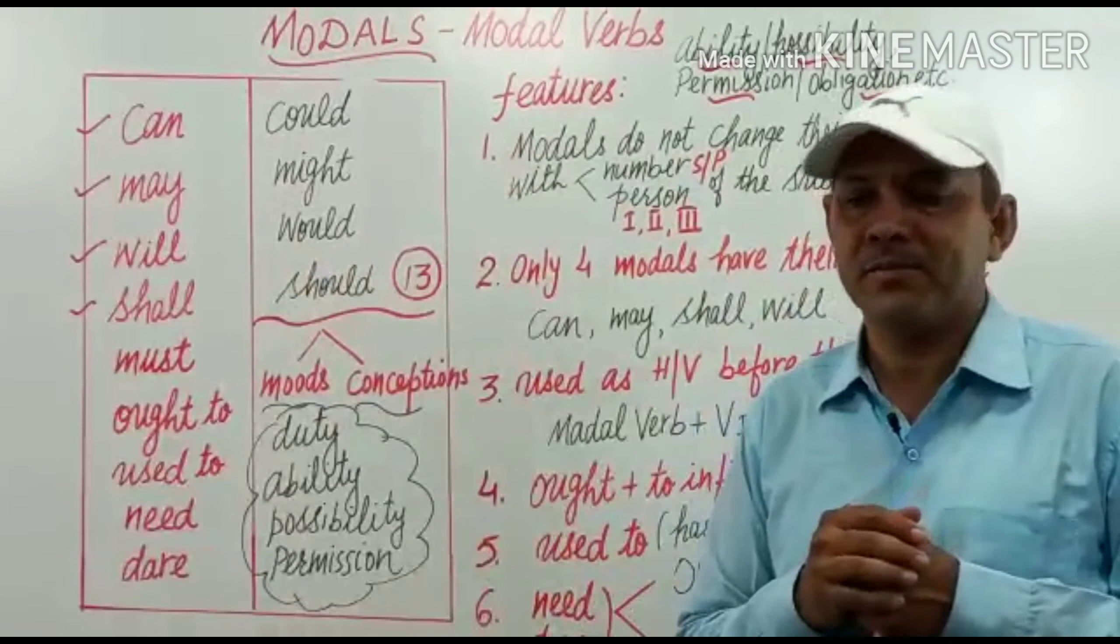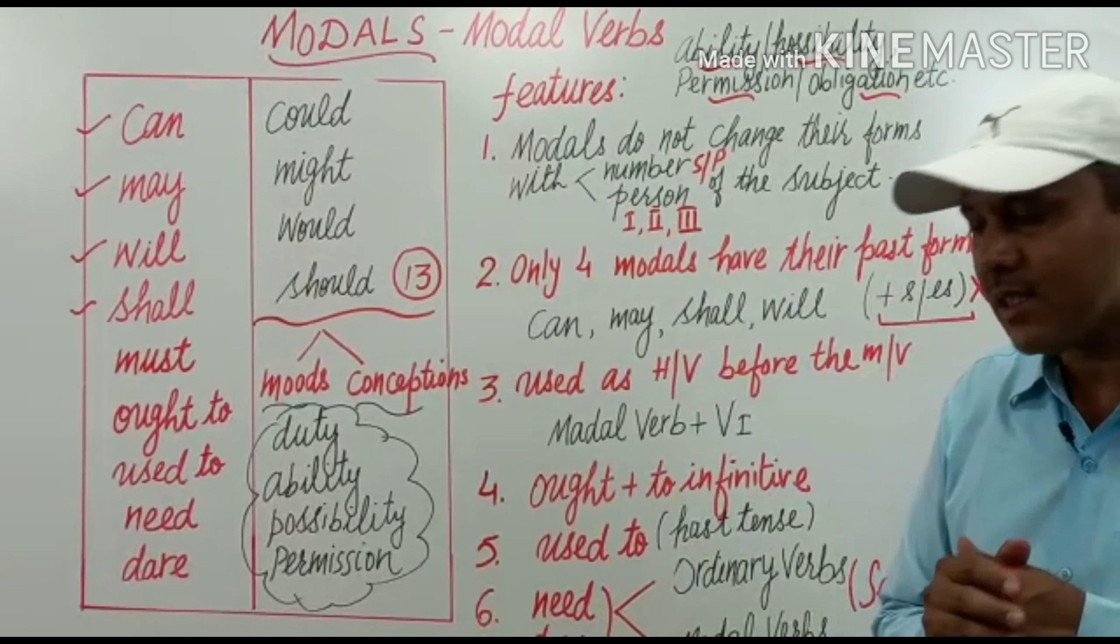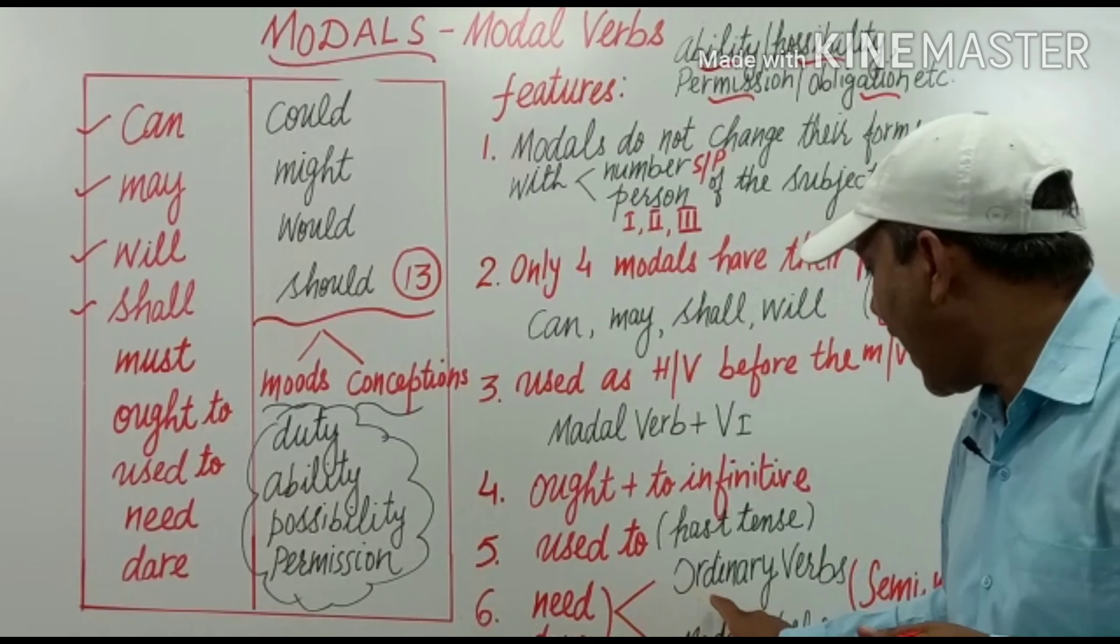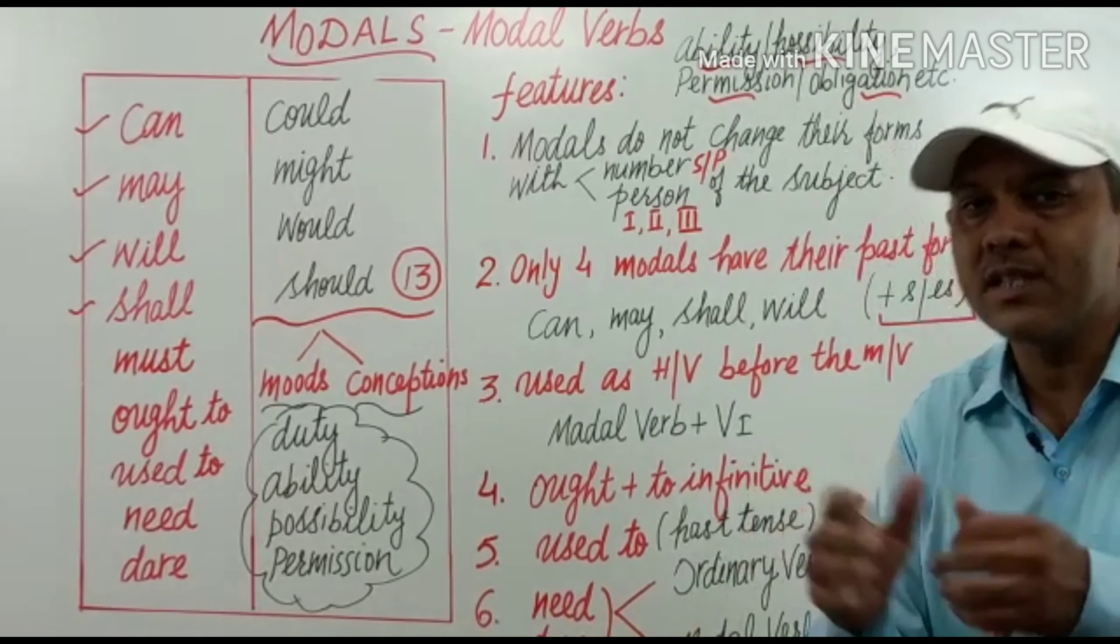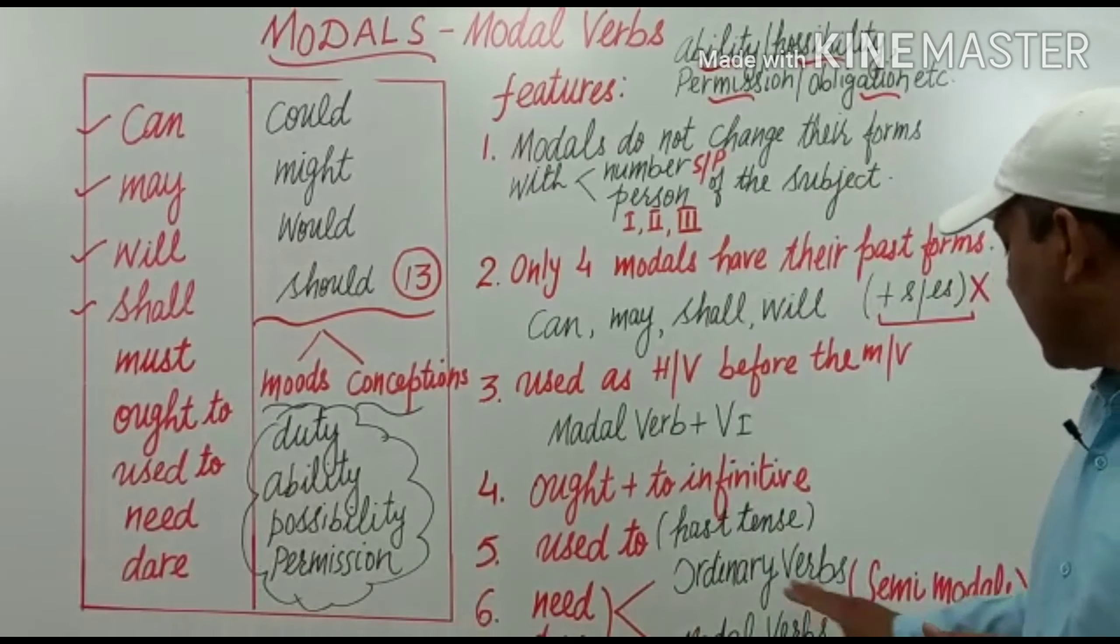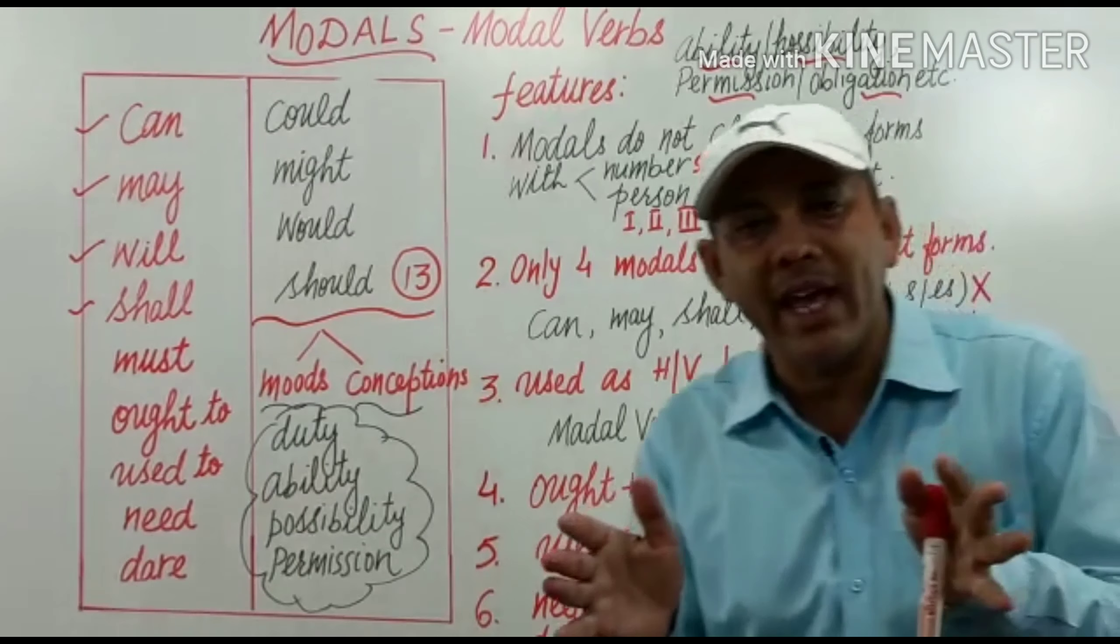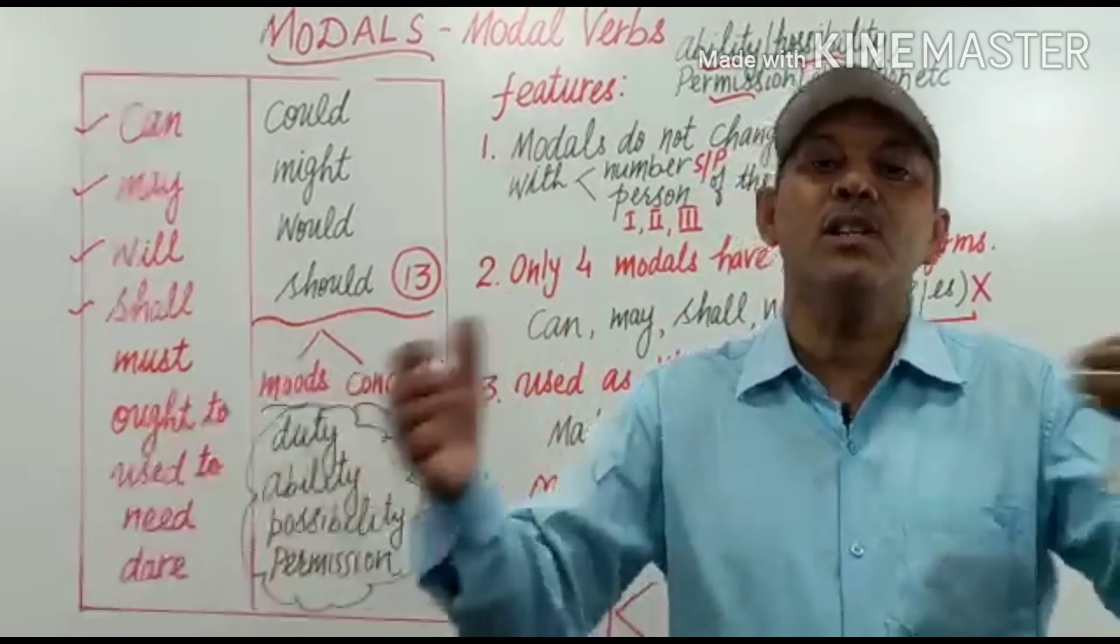Habit of past. And need and dare, these two models, these two words are used as ordinary verbs as well as modal verbs in sentences. That's why need and dare, these two models are known as semi-modal verbs or semi-modals.